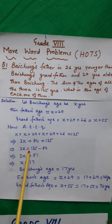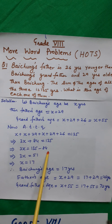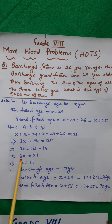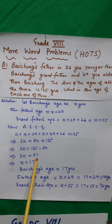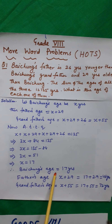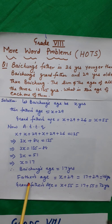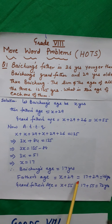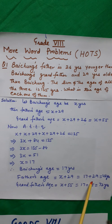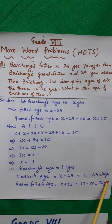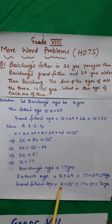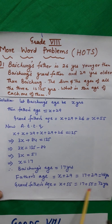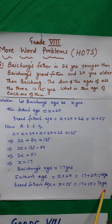This implies 3x is equal to 135 minus 84, which gives 3x equal to 51, so x is equal to 17. Therefore, Batcham's age is 17 years. Father's age is 17 plus 29, equal to 46 years. And grandfather's age is x plus 55, that is 17 plus 55, equal to 72 years.